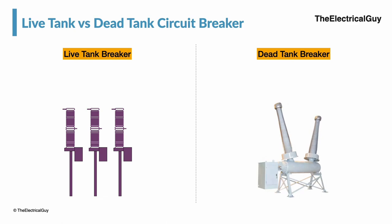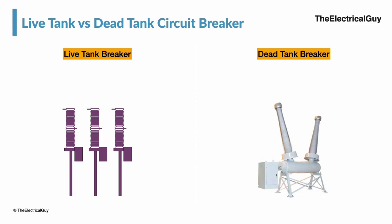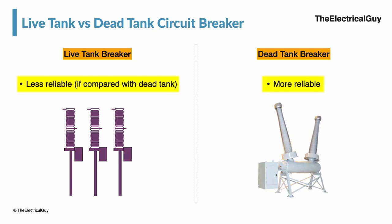Dead tank circuit breakers come completely assembled from the factory and do not need any major assemblies at site, whereas a live tank circuit breaker does not come fully assembled — major assemblies are required at site. Since the interrupter unit is completely secured in the metal-encapsulated tank and seismic performance is better, dead tank circuit breakers are more reliable than live tank breakers.